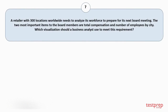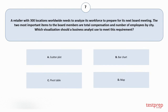Question 7. A retailer with 300 locations worldwide needs to analyze its workforce to prepare for its next board meeting. The two most important items to the board members are total compensation and number of employees by city. Which visualization should a business analyst use to meet this requirement? Your options are: A. Scatter plot. B. Bar chart. C. Pivot table. D. Map. The correct answer is option B.